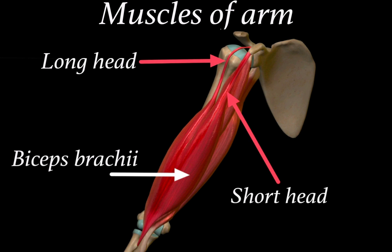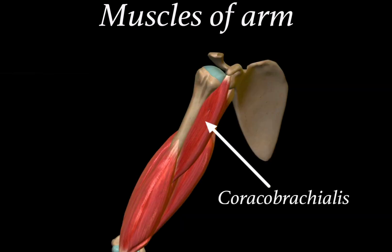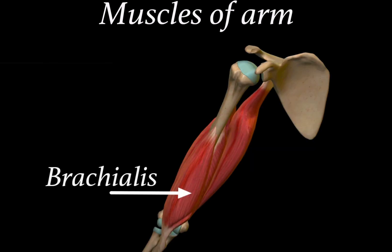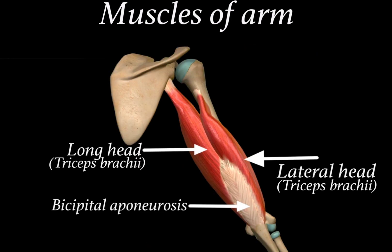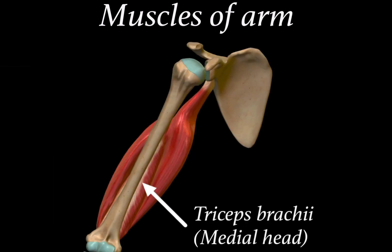Muscles of the arm — the first muscle is the biceps brachii. As the name suggests it has two heads: one is the long head and the other is the short head. When we remove biceps brachii we find coracobrachialis muscle, and below coracobrachialis there lies the brachialis muscle. On the posterior aspect of the arm we have triceps brachii, which as the name suggests has three heads: the long head, the lateral head, and the medial head.